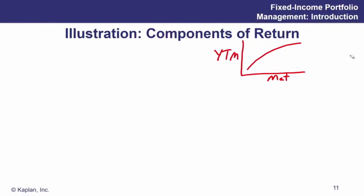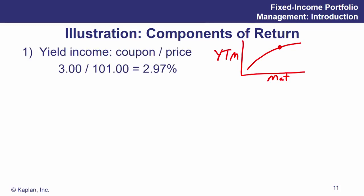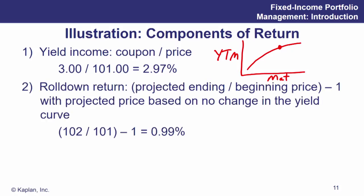Let's say I pick a point and I buy that bond. It has a stated initial yield to maturity. So let's say I buy a 3% coupon bond, and let's say the price is 101. I have a current yield of 2.97%. Over the next year, I will earn 2.97% current income return.